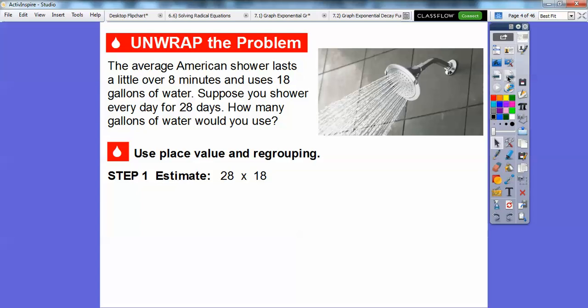We're going to use place value and regrouping. Let's first estimate 28 times 18. Well, 28 is close to 30 and 18 is close to 20. So 3 times 2 is 6, and we're going to add a couple of zeros there because there's a zero and there's a zero. So it's the 6 with those two zeros right there.